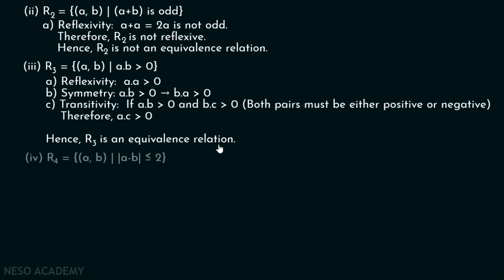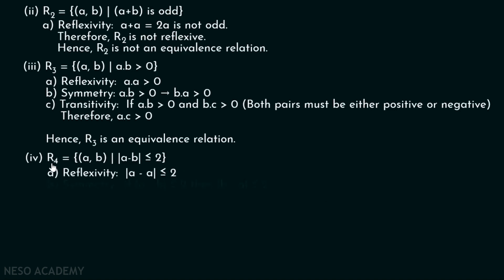Now let's look at R4: the set of all ordered pairs (a, b) such that the absolute value of a minus b is less than or equal to 2, defined over the set of natural numbers. For reflexivity, the absolute value of a minus a is always 0, which is less than or equal to 2, so R4 is reflexive. For symmetry, if the absolute value of a minus b is less than or equal to 2, then the absolute value of b minus a is also less than or equal to 2. So R4 is symmetric.